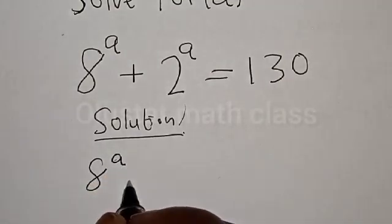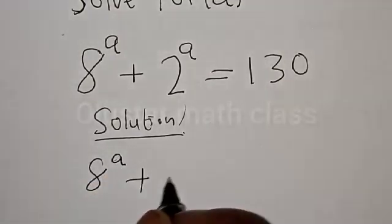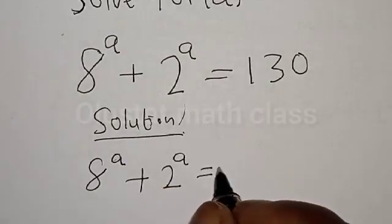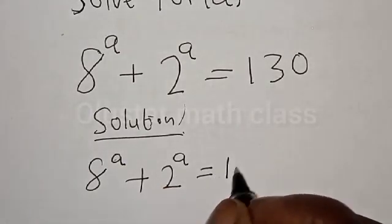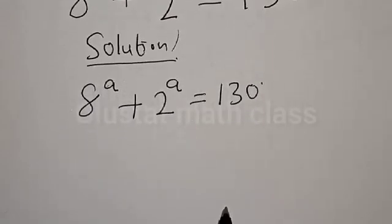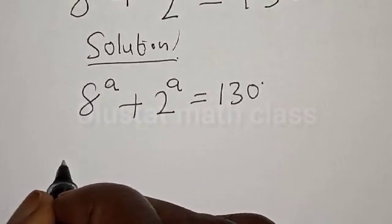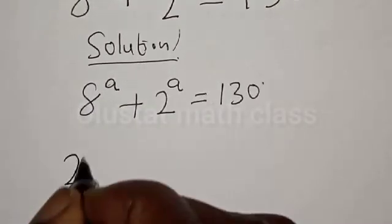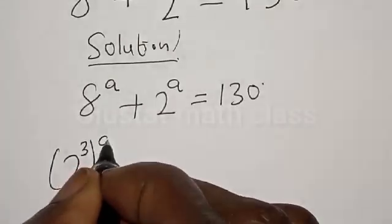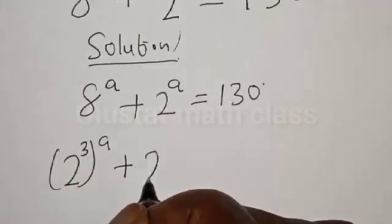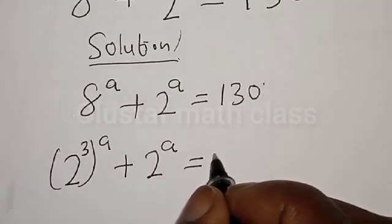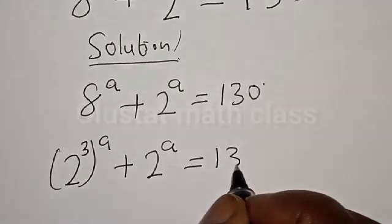Solution. We have the given equation: 8 raised to power a plus 2 raised to power a is equal to 130. Then 8 raised to power a can be expressed as 2 raised to power 3 raised to power a, plus 2 raised to power a, is equal to 130.